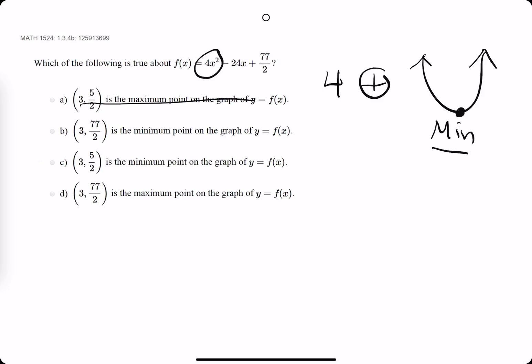So, any options that say max, we can eliminate A. We're going to eliminate option D. So, we're between options B and C, which both have the x value at 3.